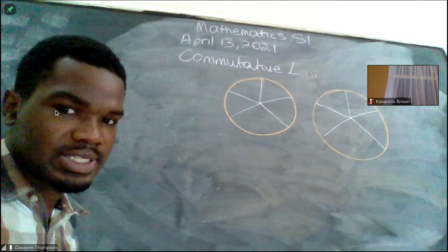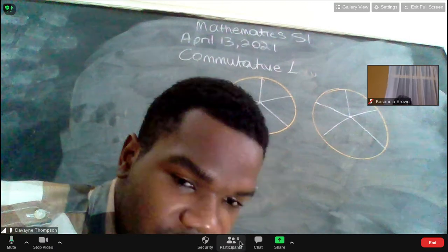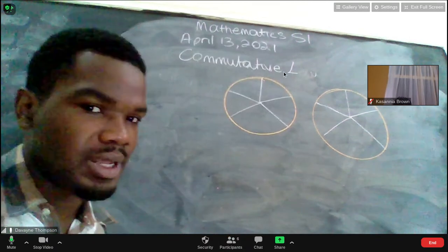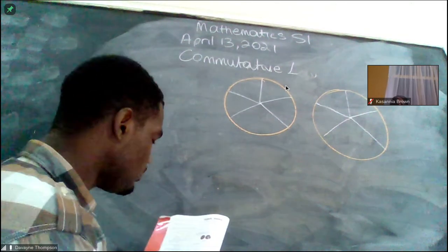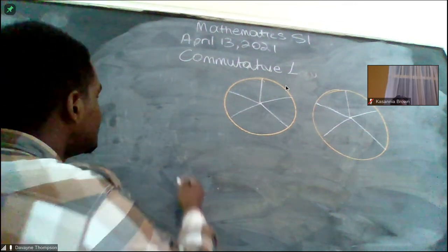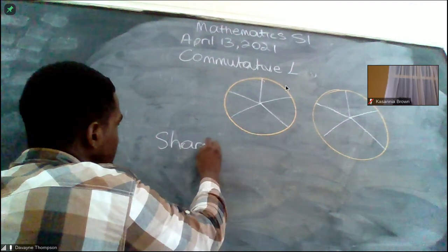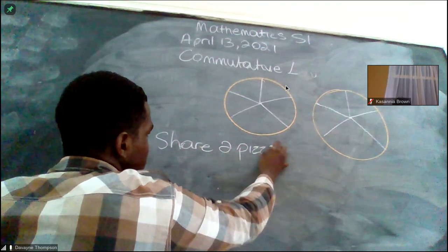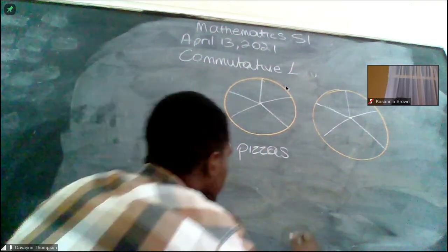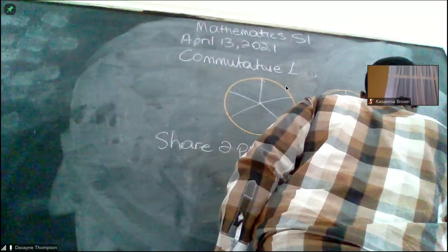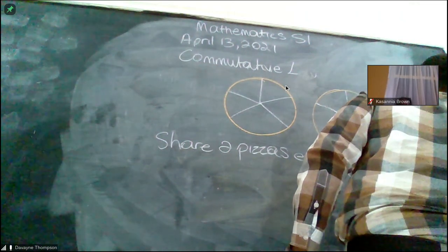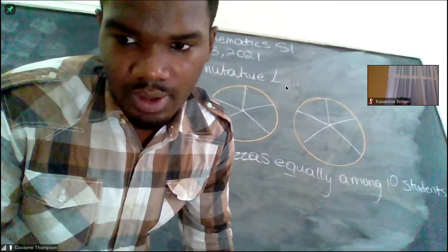Now let's say I want to give a slice to each person that came back into the zoom. Five persons came back, I'm going to give each of you a slice of pizza. Here's what I'm going to do: share two pizzas equally among 10 students.